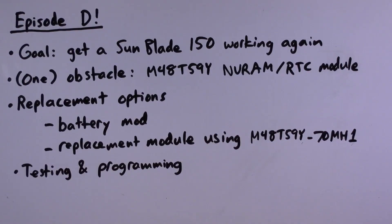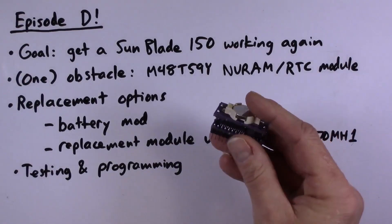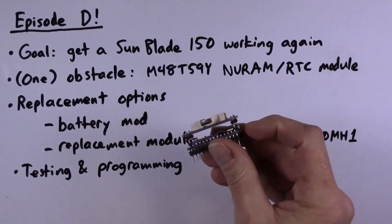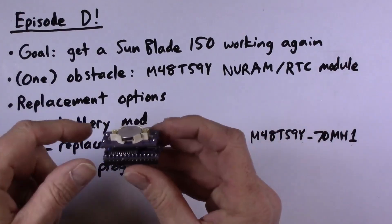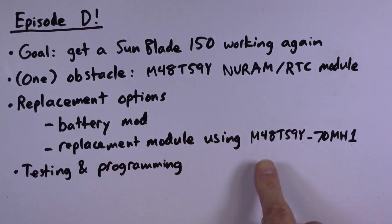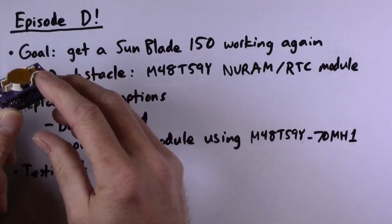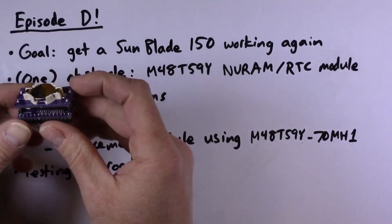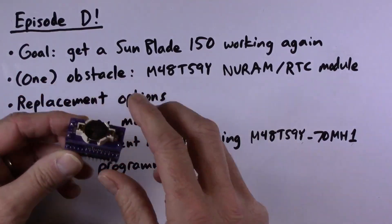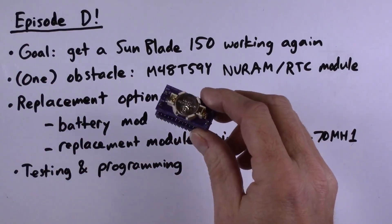My preferred option would be to build up a device from scratch that would have equivalent functionality and would have just a normal coin cell battery on it. This is what I've come up with: a little stack of two printed circuit boards. On the bottom one is a surface mount variant of this chip, the M48T59Y-70MH1.